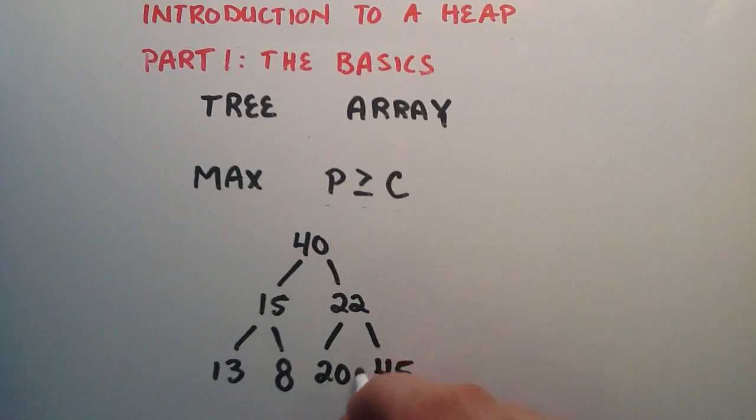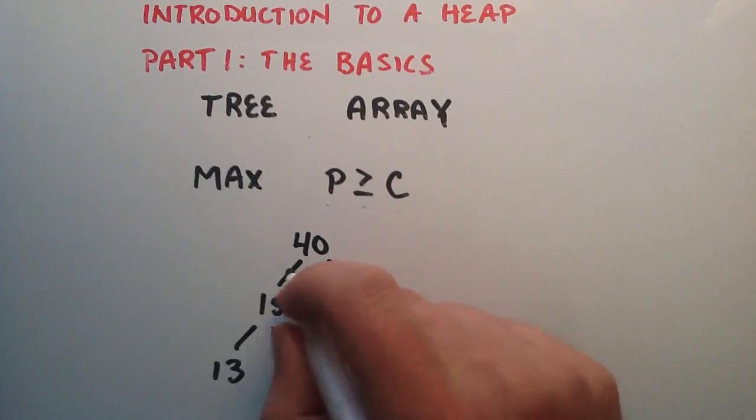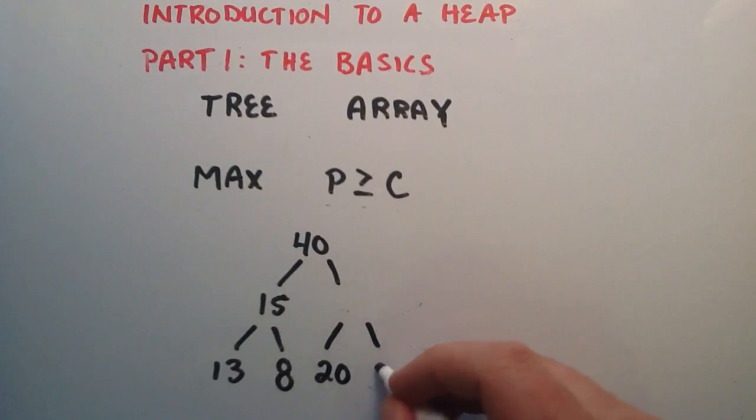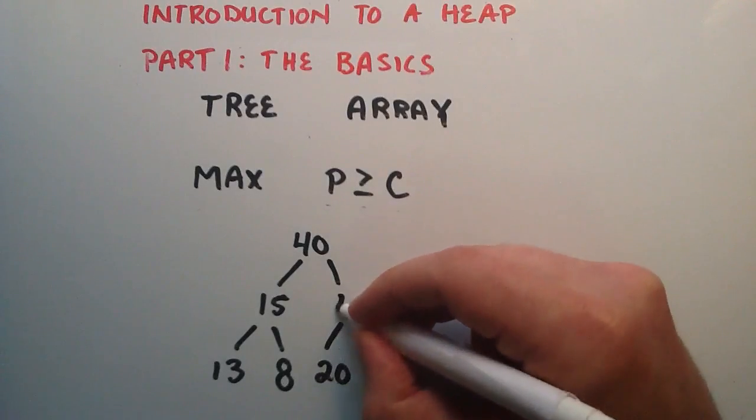So we compare the new item with its parent, and since the new item is greater than its parent, we simply switch the two locations. So 22 gets moved down here, 45 gets moved up, and then we check once again with its new parent.